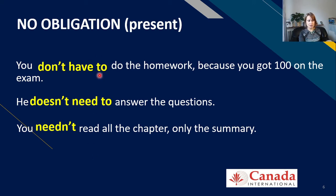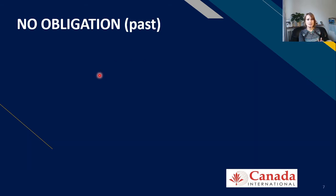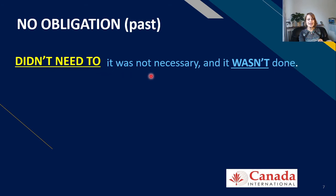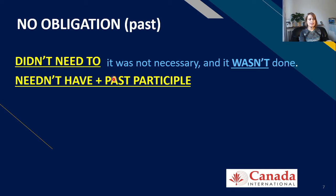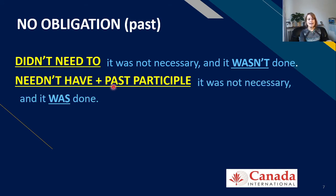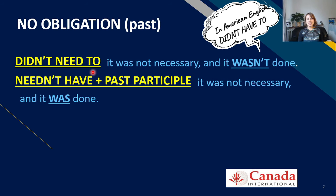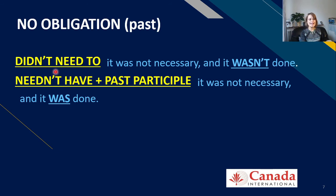No obligation in the past is a very British distinction. 'Didn't need to' means it was not necessary and it was not done. 'Needn't have' plus the past participle means it was not necessary but it was done anyway. In American English, we'd simply say 'didn't have to' for both cases. So for British speakers: 'didn't need to' is closer to 'didn't have to,' while 'needn't have' plus past participle carries the additional nuance that the action was still carried out.